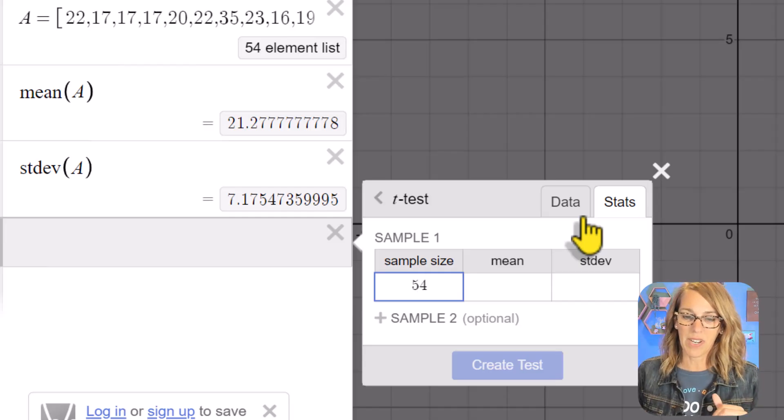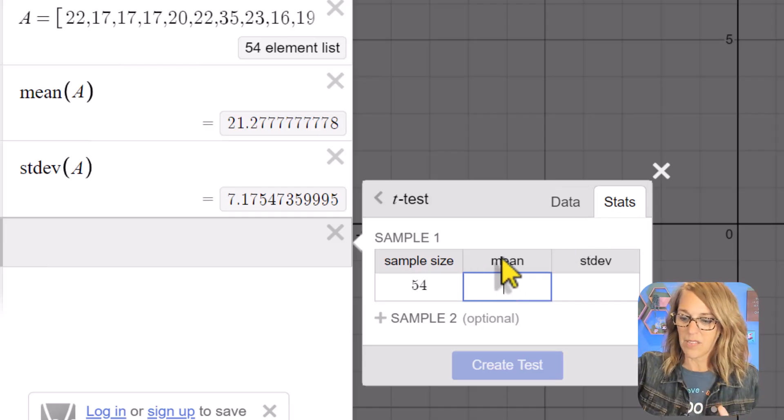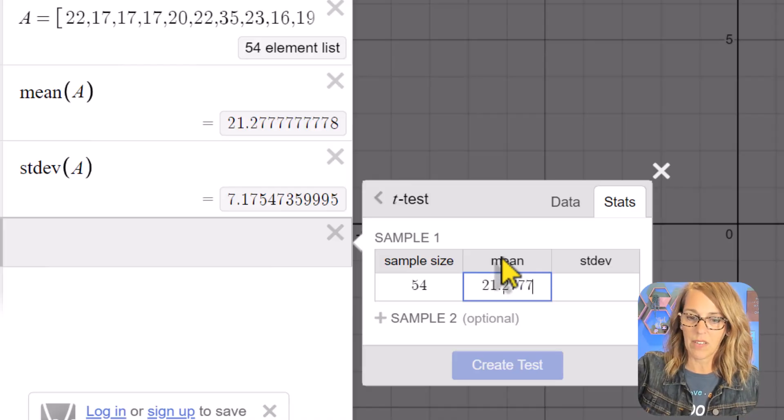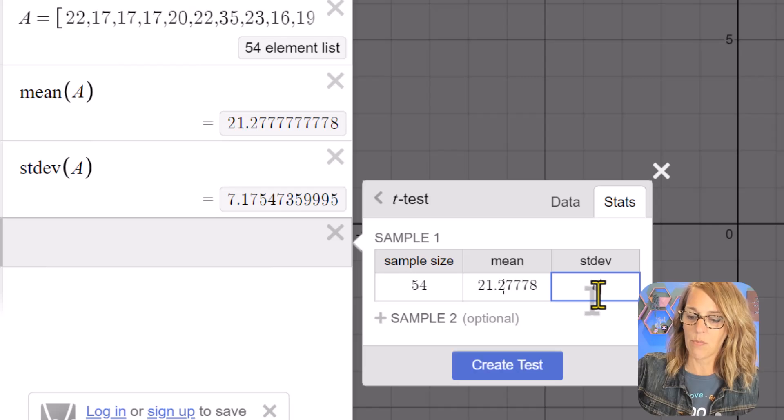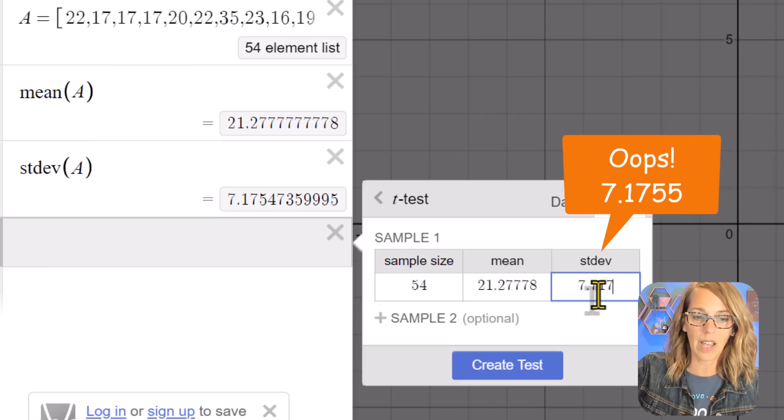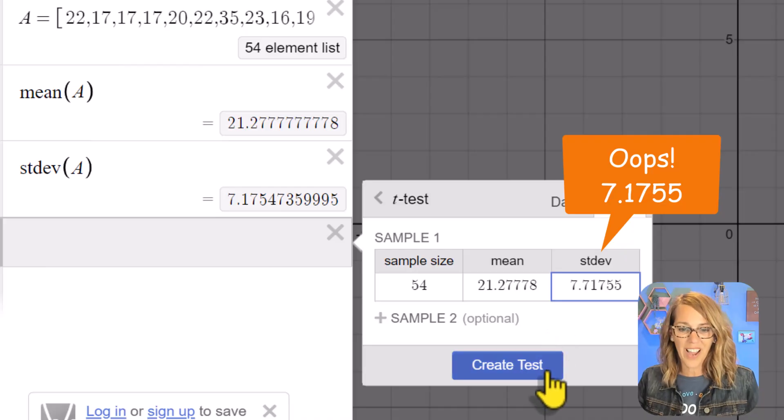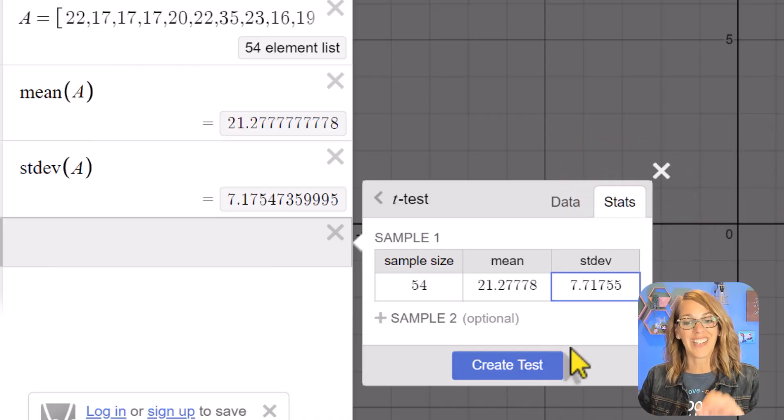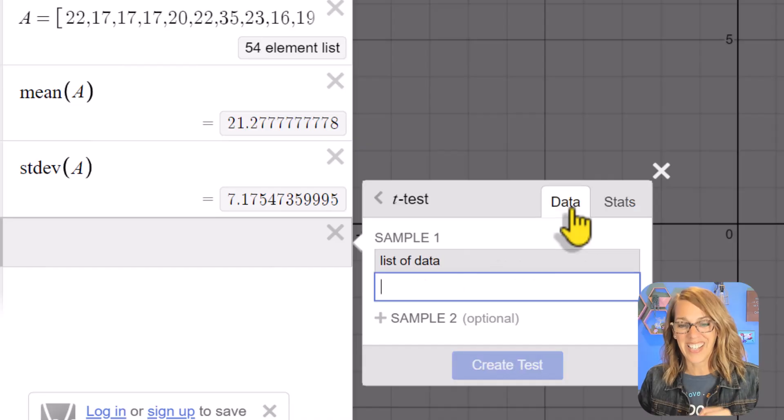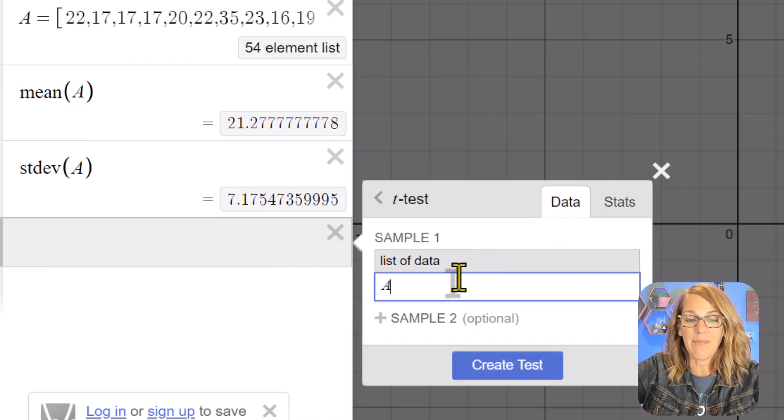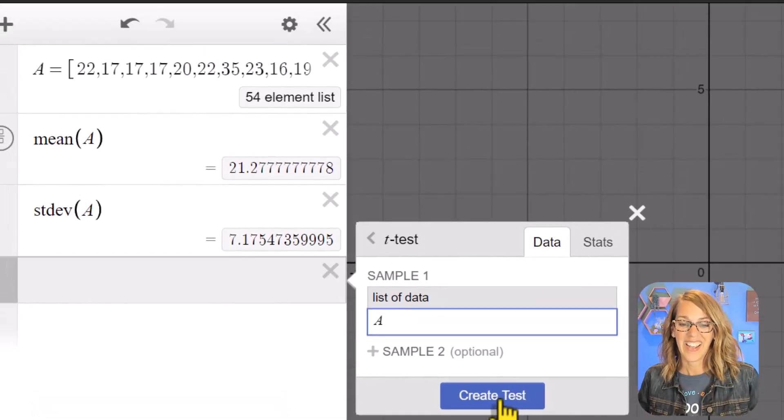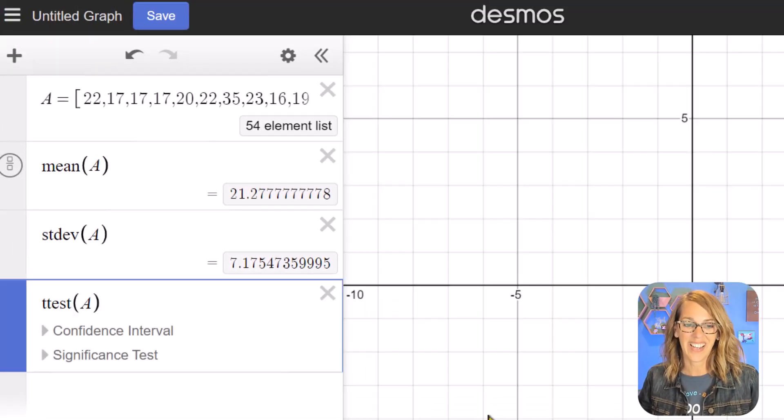I've got 54 in my sample. I've got a sample mean of 21.27778 and a sample standard deviation of 7.71755, if I rounded that correctly. Then I can hit create test, but I want to show you how to do it with the data instead. So let's click on data and I want to run it with my list A.